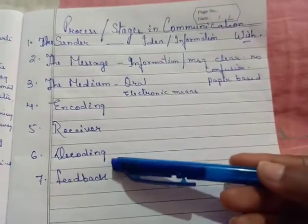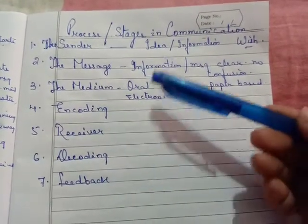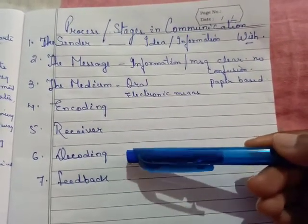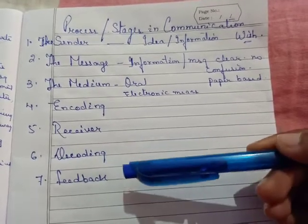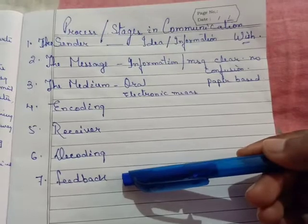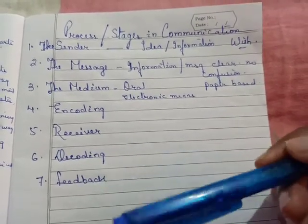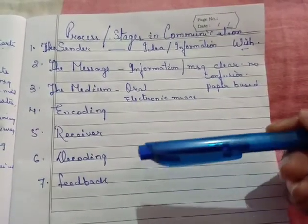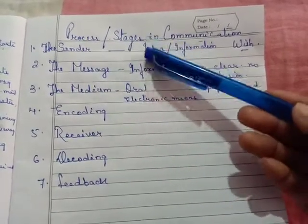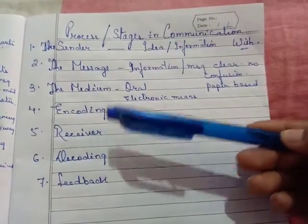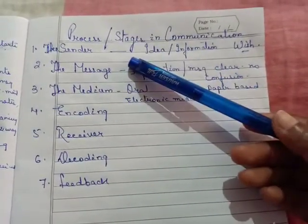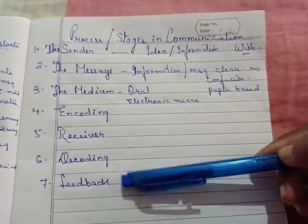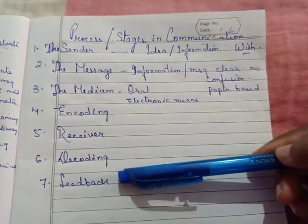The last step is feedback. Feedback is given by the receiver. After receiving the message, the receiver decodes it, attaches its own meaning, simplifies the information, understands the real meaning of the message, and then gives replies or asks questions to the sender — that is known as feedback. Feedback is a tool by which the sender can understand whether the receiver has understood the information. If there is no feedback, the communication has failed, so feedback plays a vital role in the process of communication.